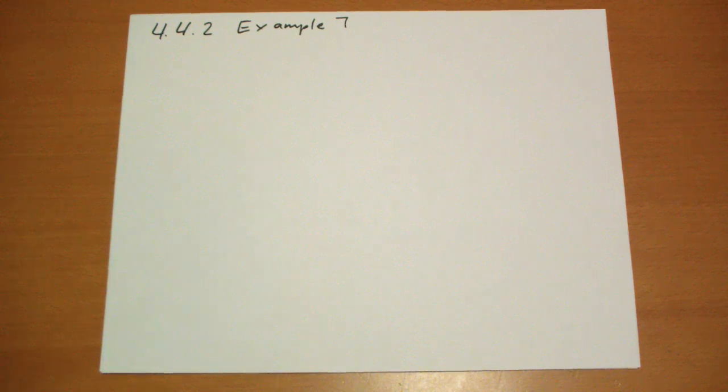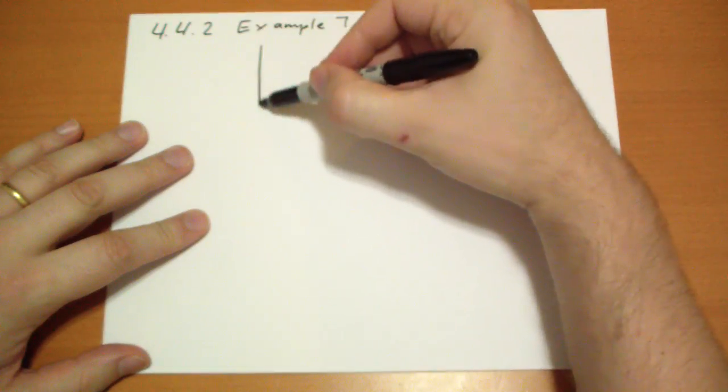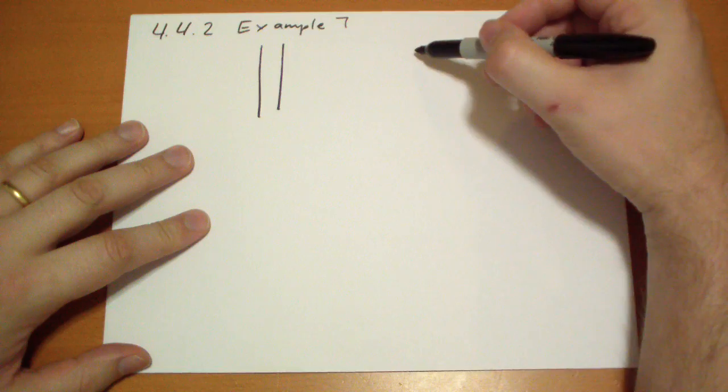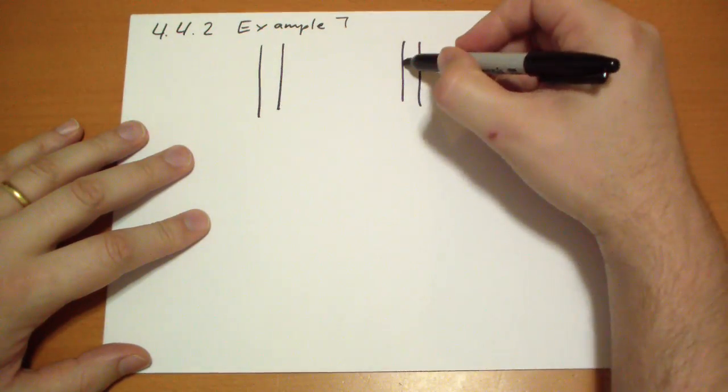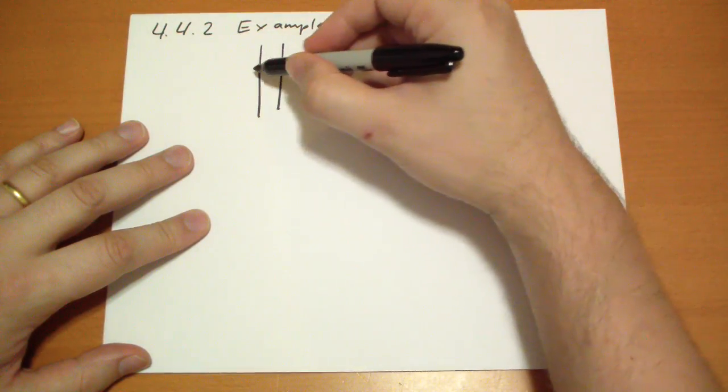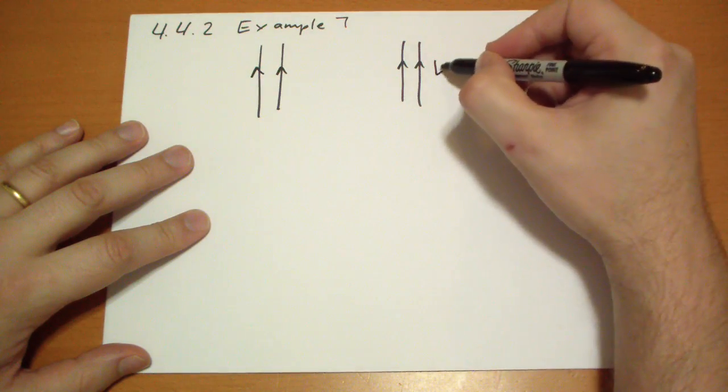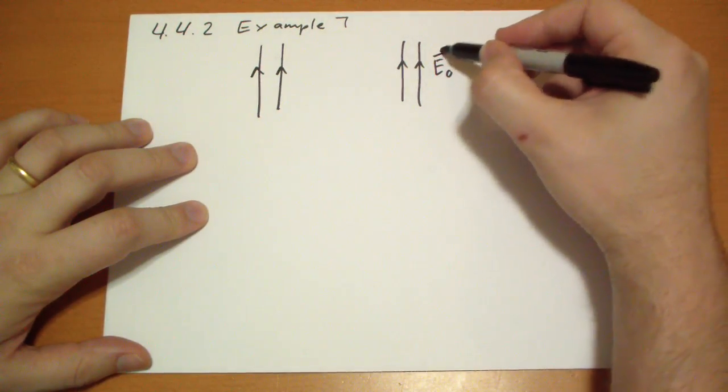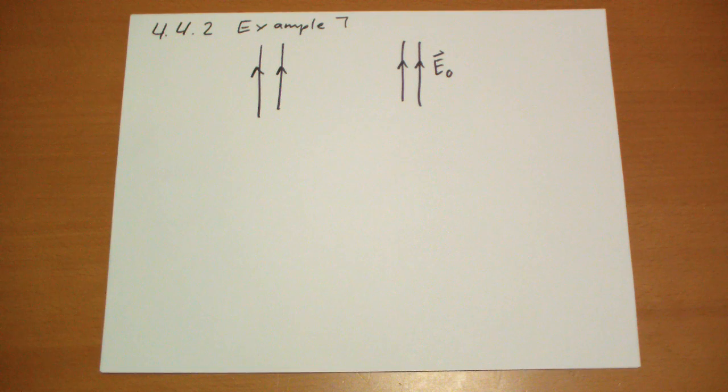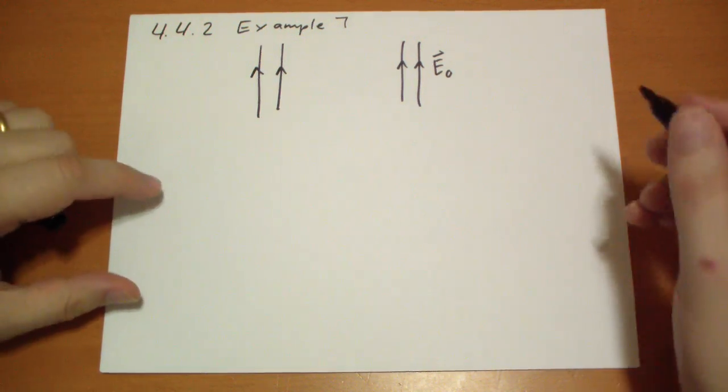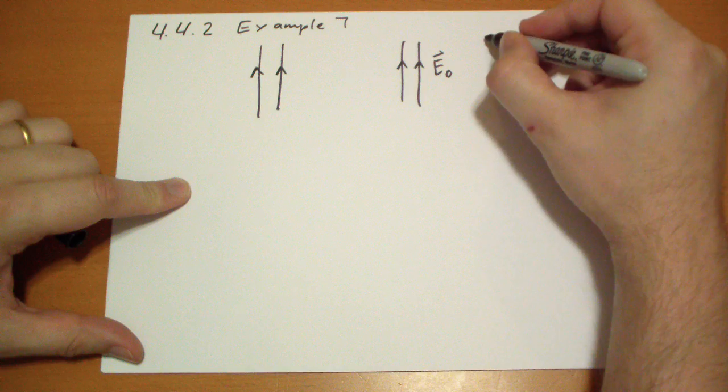Section 4.4.2, Example 7. This example has an initial electric field, which I'll represent with field lines, of intensity E₀ pointing up. E₀ vector, actually. And what we do here is kind of like Example 8 in Chapter 3, so I'll write that here.